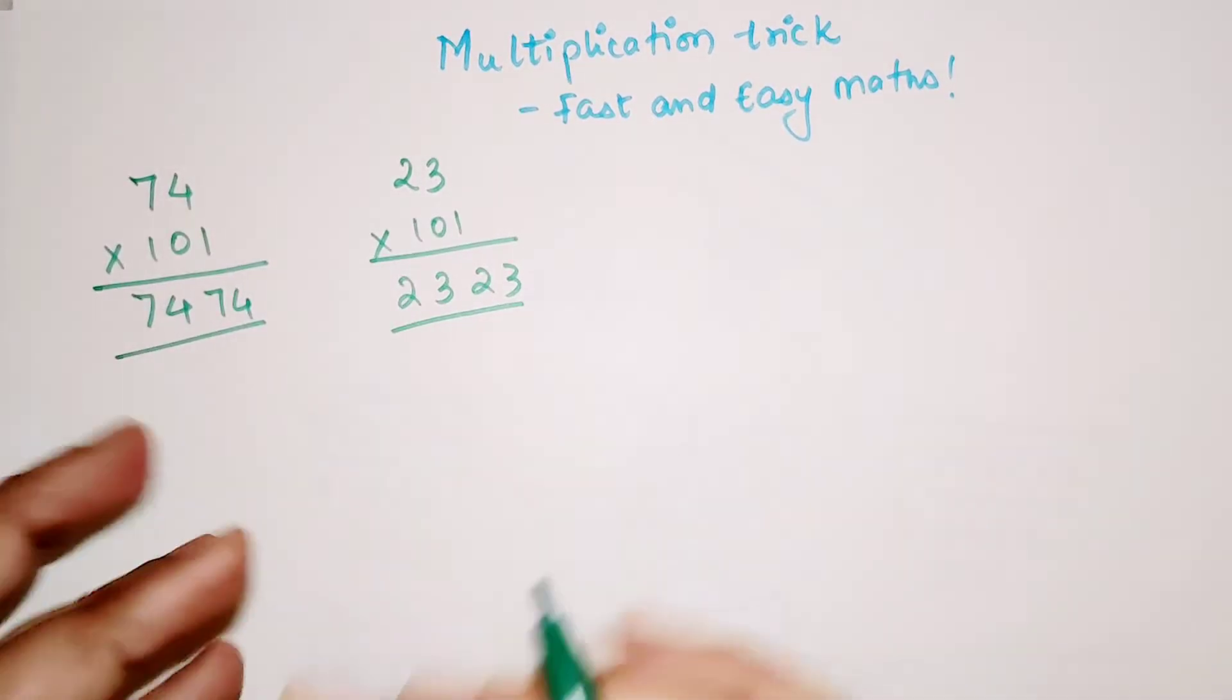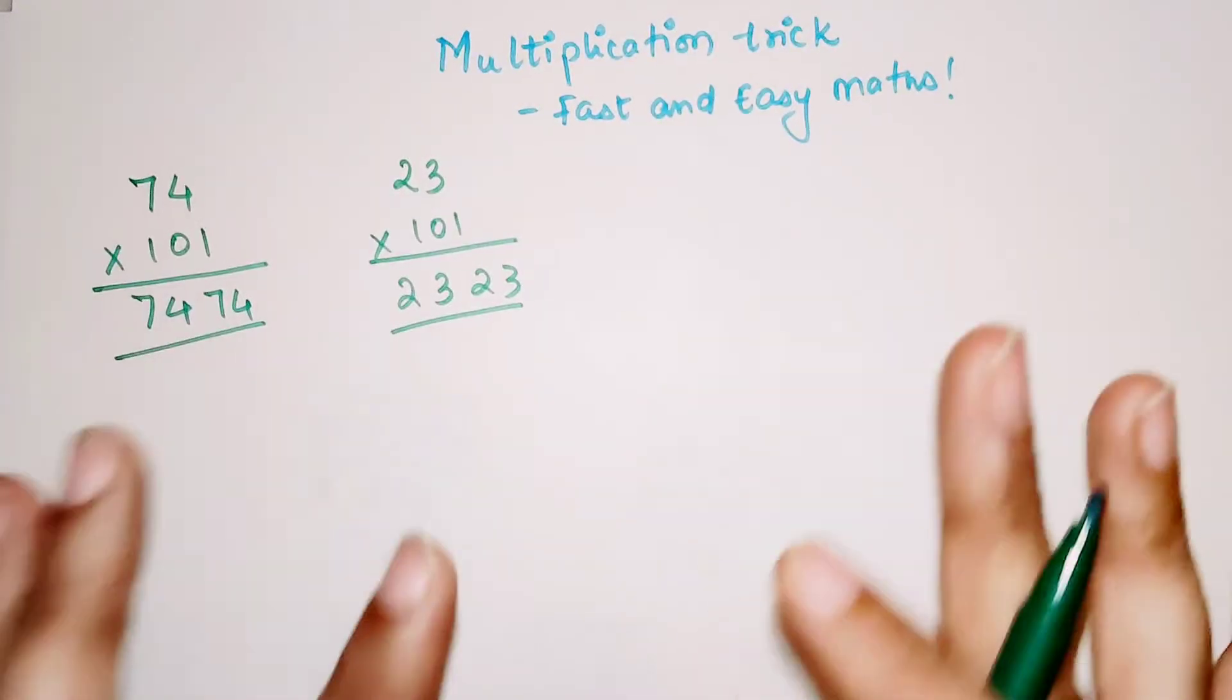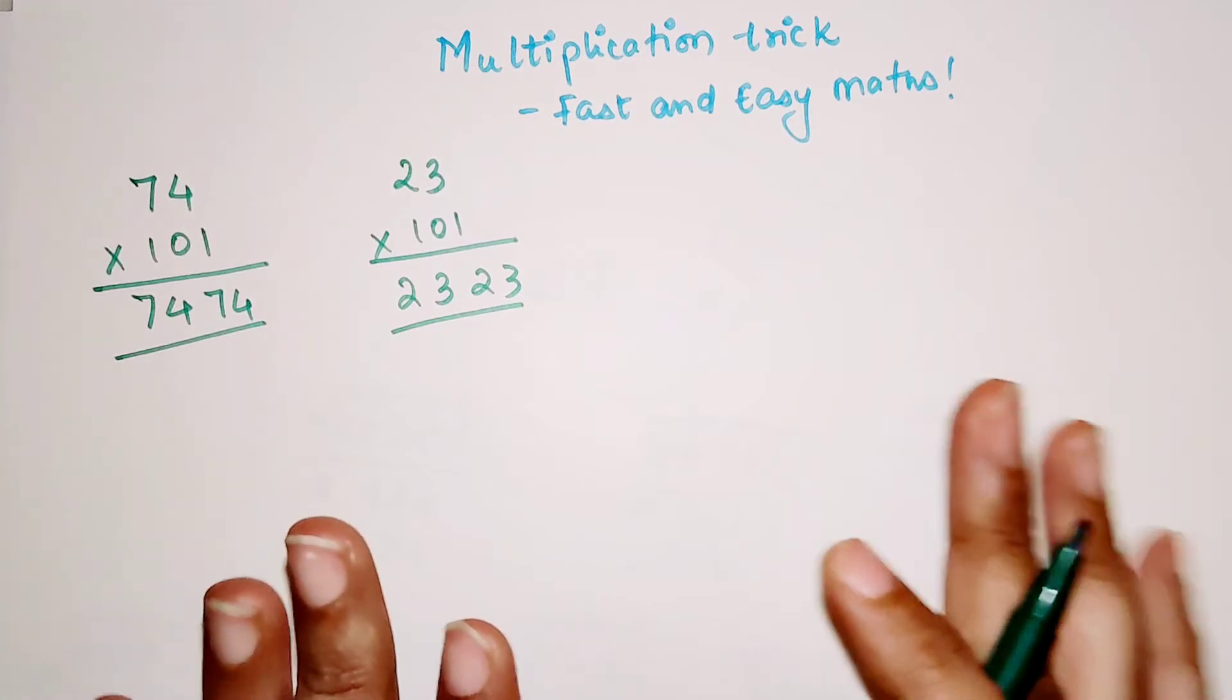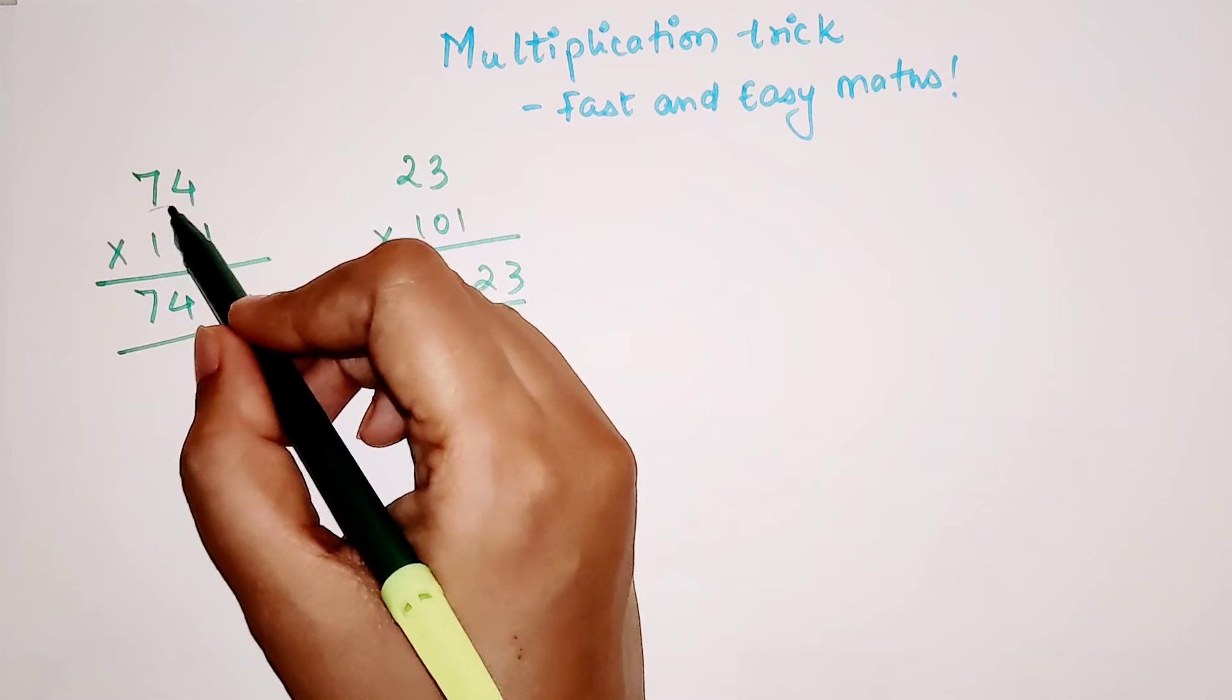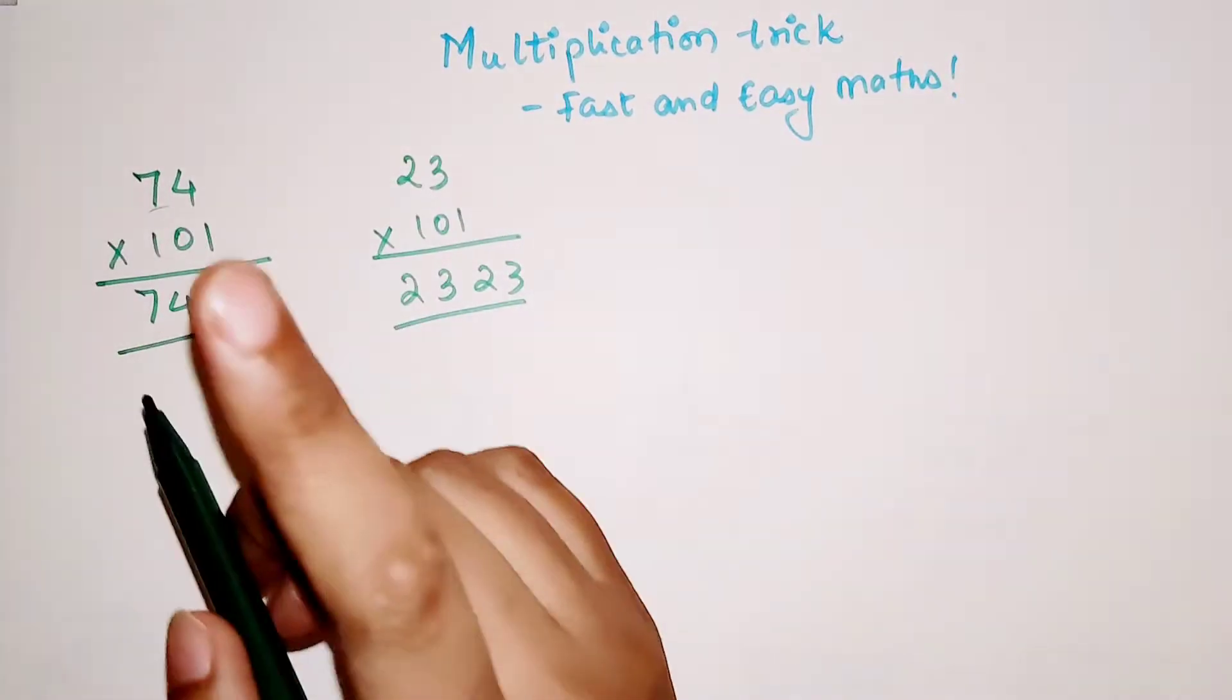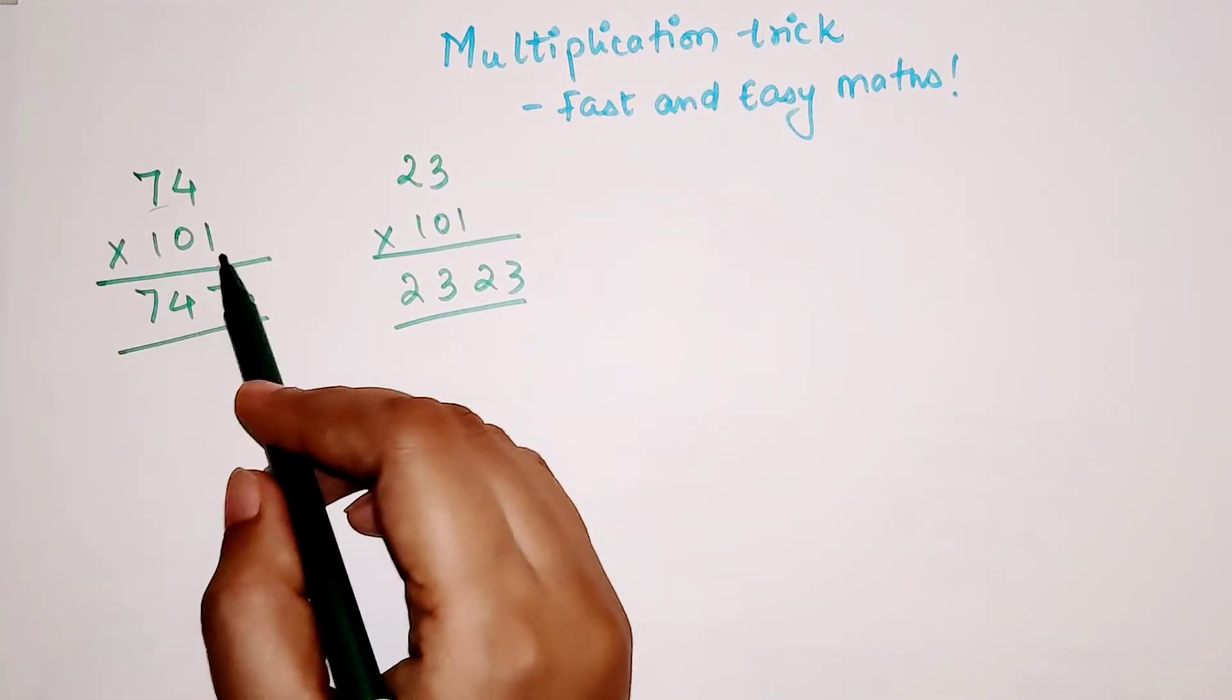Now students, how is this trick working and what are the certain things which you need to remember while applying this trick? The first very important thing is that the digits in the multiplicand has to be less than the digits in the multiplier.